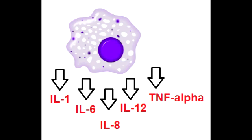Name all the cytokines secreted by the macrophages. The cytokines secreted by macrophages are interleukin-1, interleukin-6, interleukin-8, interleukin-12, and TNF-alpha.